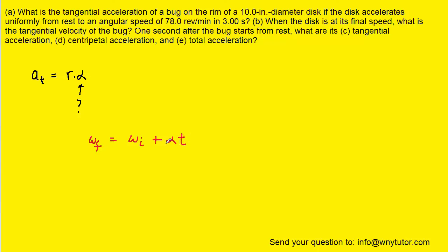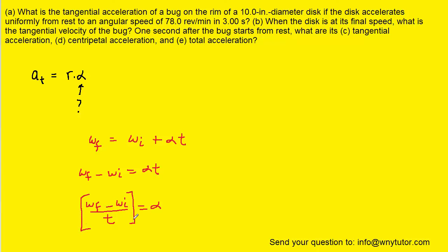We can solve this equation for the angular acceleration by first subtracting the initial angular velocity over to the left-hand side, and then dividing both sides by the time t. Here is the expression for angular acceleration, and we can substitute that expression in for alpha in our tangential acceleration equation.